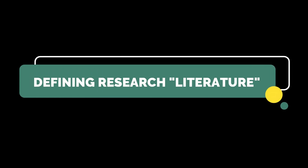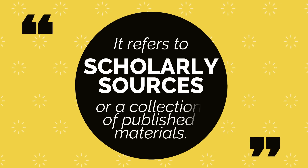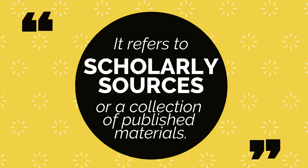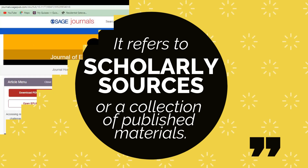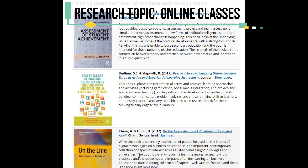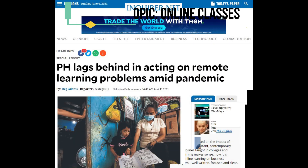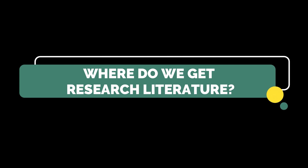First, let's define what is literature in research. Research literature refers to scholarly sources, or a collection of published materials relevant to a particular area of research or topic under experiment, investigation, or study. That means that, for example, if your research topic is about online classes in the new normal, the materials you are going to look for should be about that particular topic. The question is, where do we get these materials?